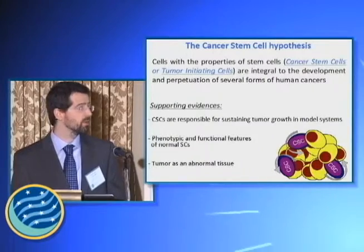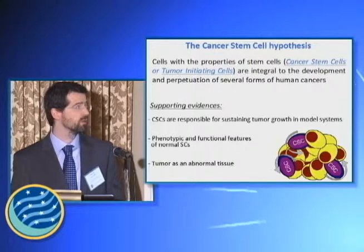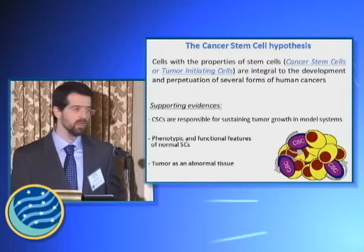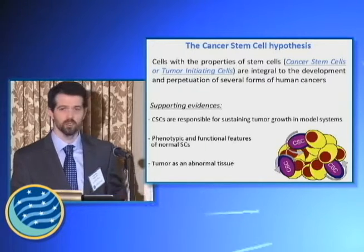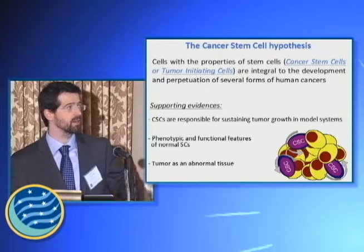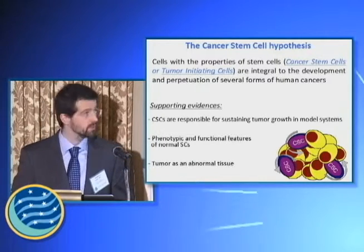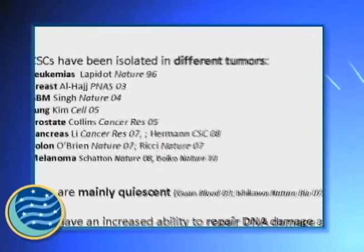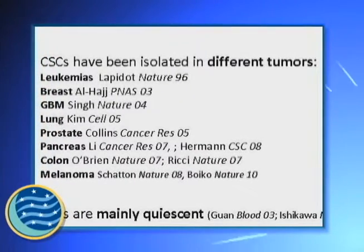We know that cancer stem cells are responsible for sustaining tumor growth in model systems. Tumors are abnormal tissues that have a hierarchical organization, and at the apex of this hierarchy there are cancer stem cells. Cancer stem cells exist in different tumors and have been isolated in a long list of solid tumors and hematological diseases.